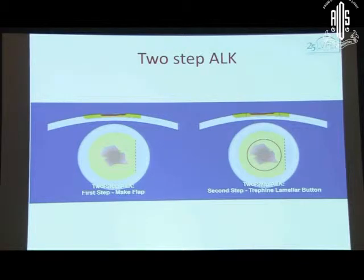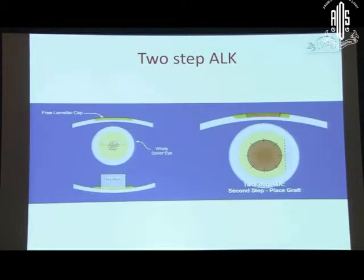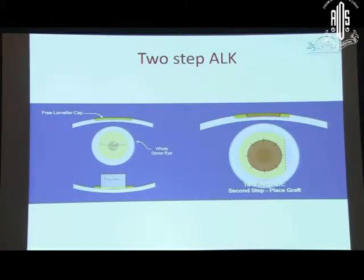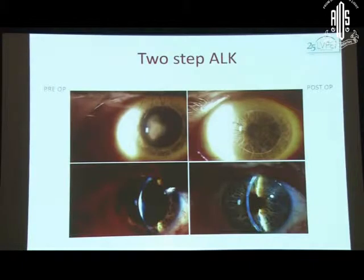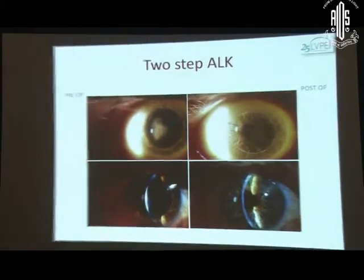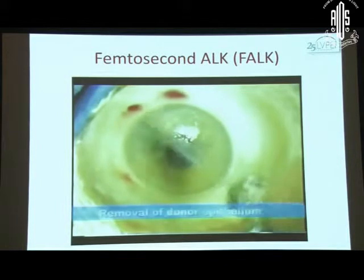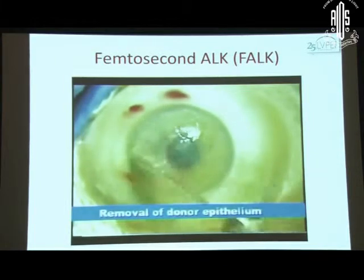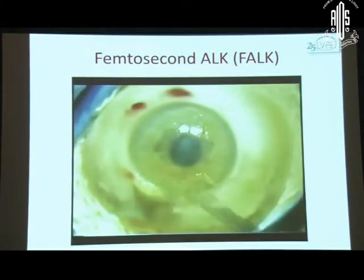There is an alternative called two-step ALK where first a flap is made, then a trephine is made in the area where the pathology is present, this trephinated area is taken off, and then with the same punch or maybe a slightly larger one, you can replace this area with a clear cornea. But this again in most cases requires a suture because the apposition of the edge is not as good as you would expect. This gives rise to the procedure called FALK, or femtosecond anterior lamellar keratoplasty, where the best part is that it can be sutureless.